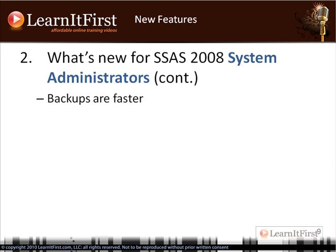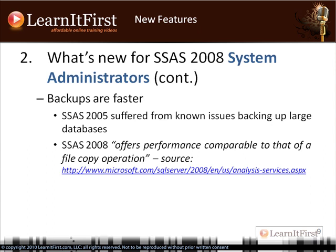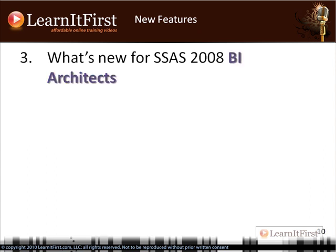A major change for those dealing with backups of Analysis Services: your backups are very fast compared to SQL Server 2005 for large multidimensional databases. In 2005 there were known issues with speed — it was like a bell curve where once your database reached a certain size, backups slowed dramatically. In 2008 it's very fast. The best analogy is that it takes about as long as a file copy of that database size.